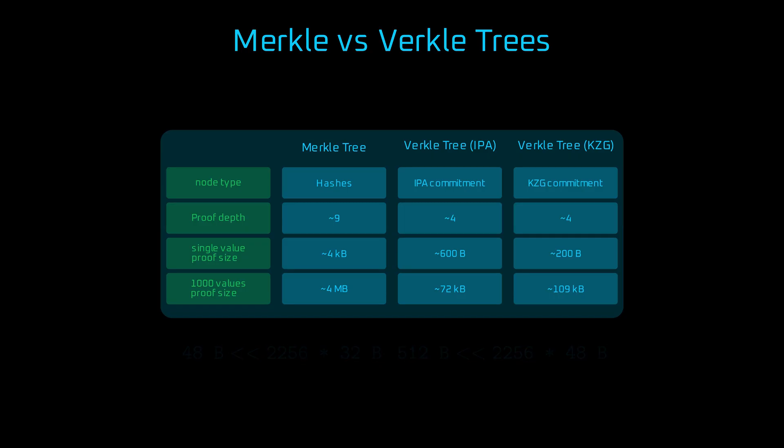All because of horizontal multi-proofs, which let us prove multiple values across different branches with a single aggregated proof. We only pay once for the proof, and the rest is just commitments. That's why verkle trees can be the future of Ethereum's scalability. Smaller witness sizes, faster syncs, and fewer constraints on validator bandwidth.